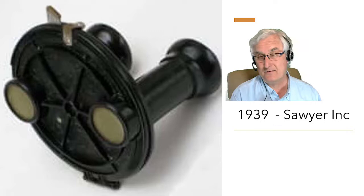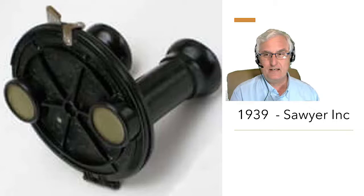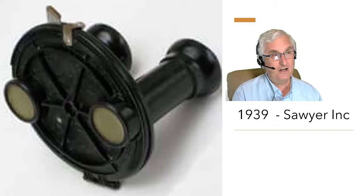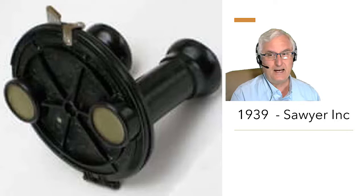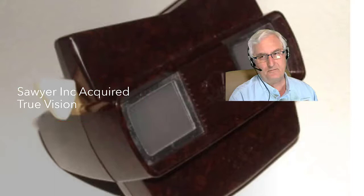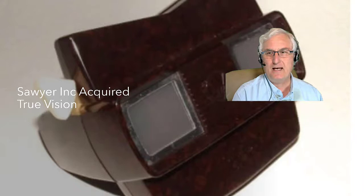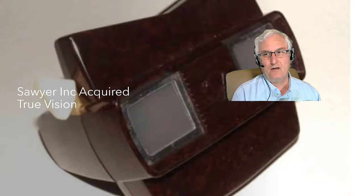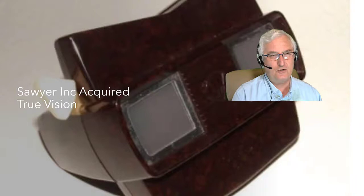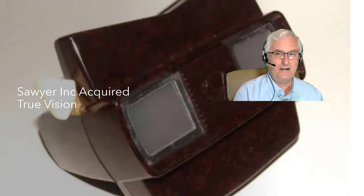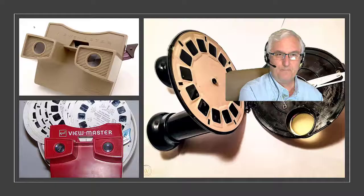The View-Master was a big hit in 1939 at the World's Fair. As Sawyer Incorporated was a postcard company, the first reels were travel-related images of the Grand Canyon and Carlsbad Caverns. Sawyer later acquired True Vision, a competing stereo manufacturer, and obtained rights to use Walt Disney Studio characters in their reels. In 1952 a home-use camera was sold so families could make their own reels. Several models were developed, and in 1962 the modern View-Master Model E arrived — streamlined and made of lighter plastic.